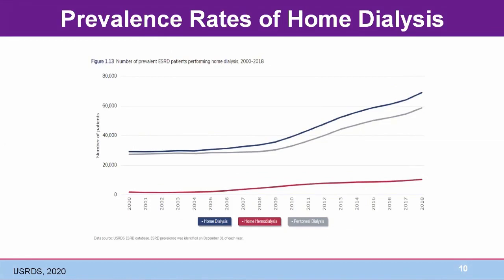The number of prevalent patients with kidney failure who performed home dialysis at the end of 2018 was almost 70,000, an increase of almost 8% from 2017 — the highest rate of growth since 2013, shortly before a shortage of peritoneal dialysis fluid occurred, which likely limited subsequent growth. At the end of 2018, home dialysis utilization stood at 12.4% of all dialysis patients, with nearly 85% of home dialysis patients performing peritoneal dialysis.